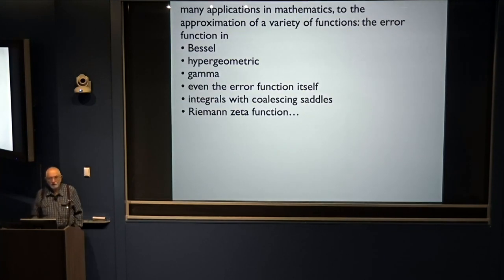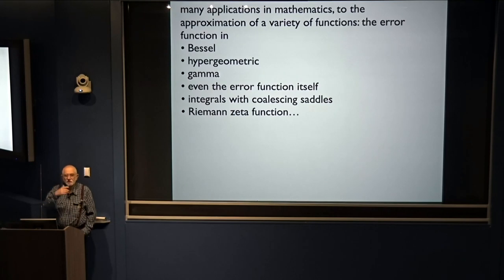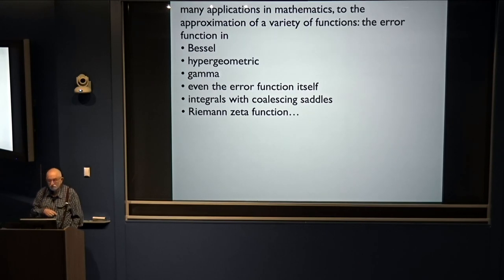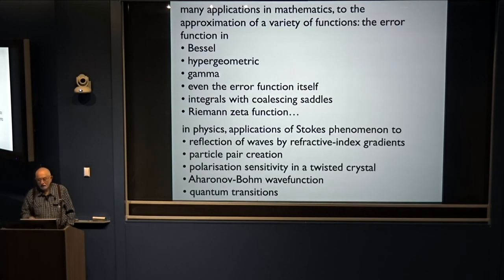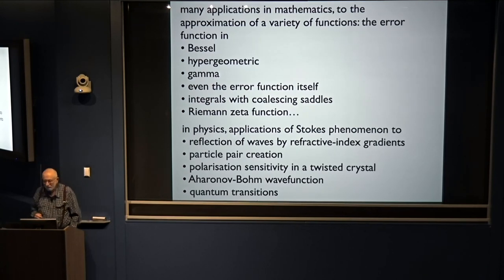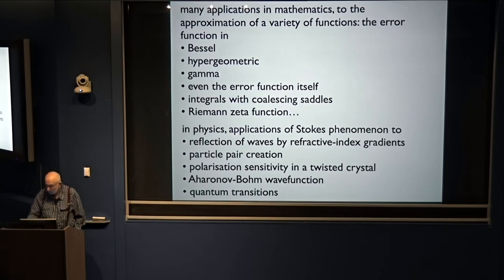There's a wide variety of applications in mathematics: the error function, Bessel functions, hypergeometric functions, gamma function — even the error function itself has the Stokes phenomenon in it. Integrals with coalescing saddles, the Riemann zeta function, many cases. And in physics: refraction of waves by refractive index gradient, particle pair creation, polarization sensitivity in a twisted crystal, Aharonov-Bohm wave function. I'll now talk about quantum transitions.